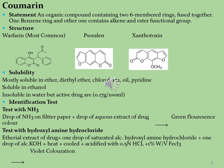Warfarin is isolated from a coumarin source and is used as an anti-coagulant agent and blood thinner. Warfarin reduces the formation of blood clots in veins and arteries. Soralene is isolated from Ficus carica and Foeniculum vulgare and is used in skin diseases like vitiligo and eczema. Xanthotoxin is isolated from Ammi majus and is also used for treatment of vitiligo and eczema.